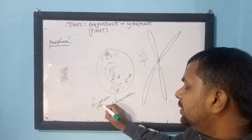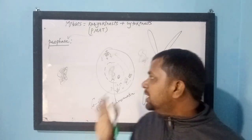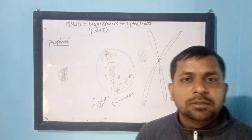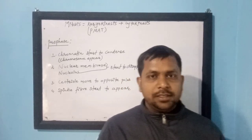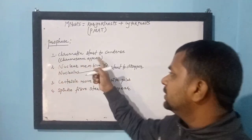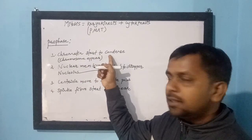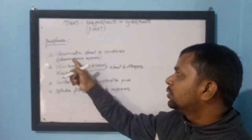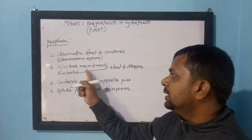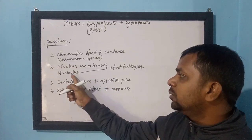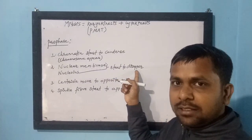To conclude prophase: the chromatin starts to condense, meaning chromosomes start to appear. Similarly, the nuclear membrane and nucleolus start to disappear, and spindle fibers start to appear. These are the key events of prophase.